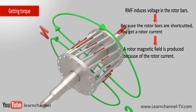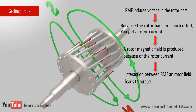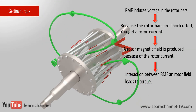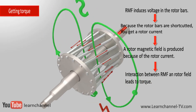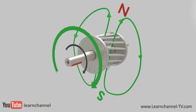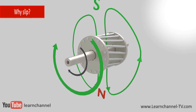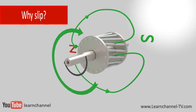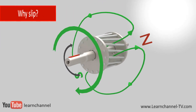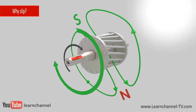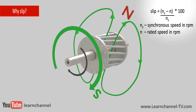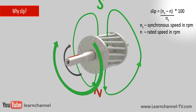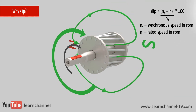The direction of the force, as a result of the interaction between the stator and rotor field, can also be determined by the Lorentz law. Torque can only be created when rotor current is induced. In other words, the rotor always has a rotating speed slightly lower than the RMF. This difference is called slip.